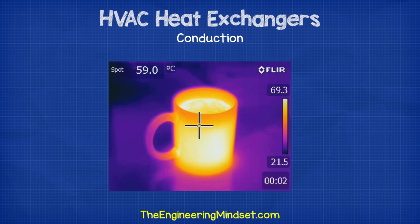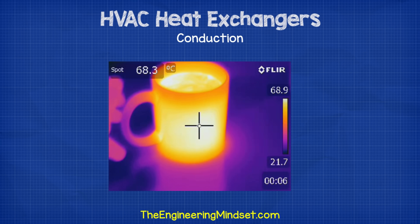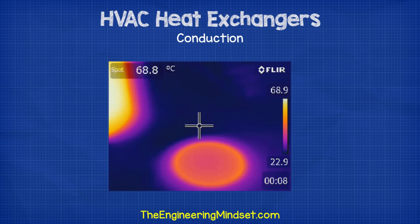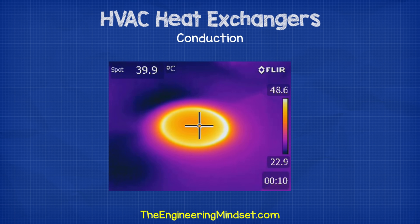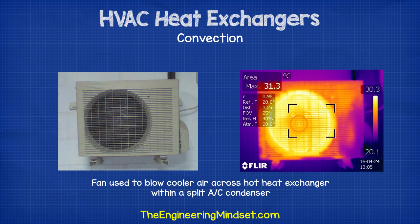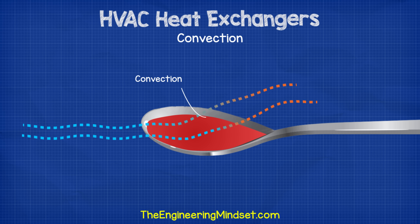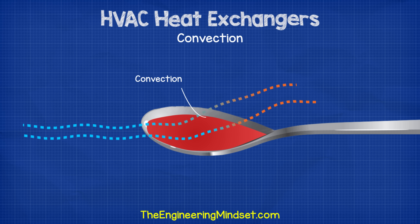Conduction occurs when two materials of different temperatures physically touch. For example, if we place a hot cup of coffee onto a table for a few minutes and remove the cup, the table will have conducted some of this thermal energy. Convection occurs when fluids move and carry the thermal energy away. This can occur naturally or by mechanical force such as using a fan. An example of this is when you blow onto a hot spoon of soup to cool it down.